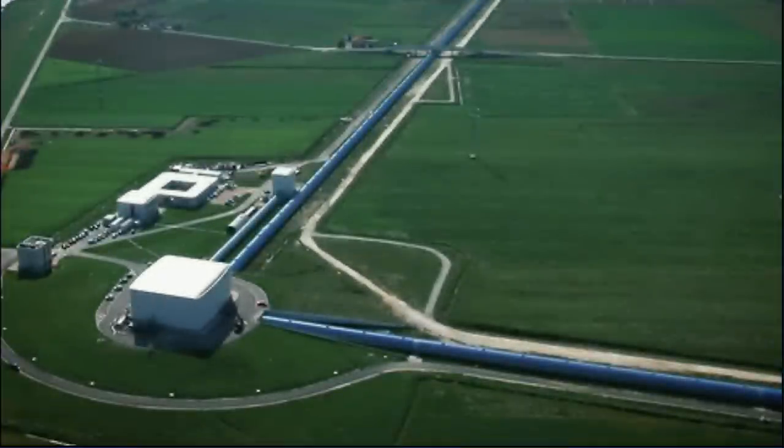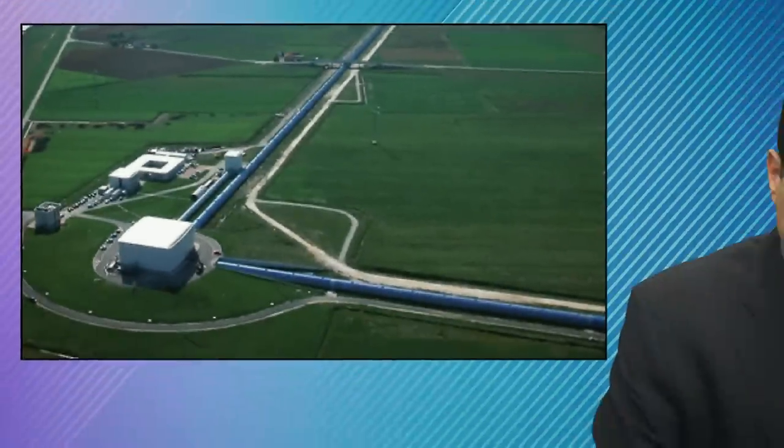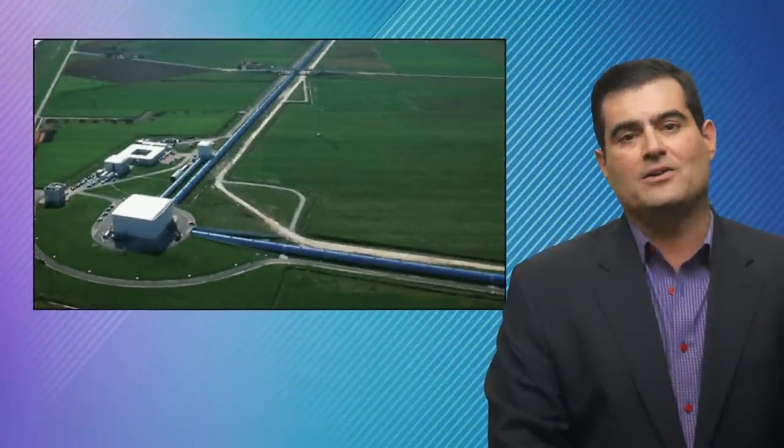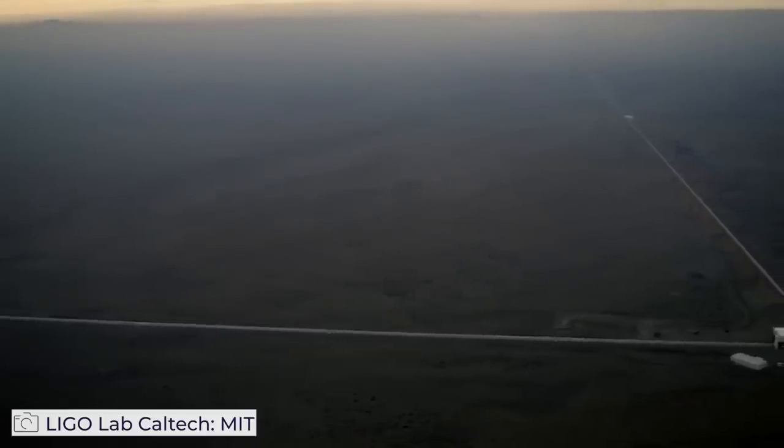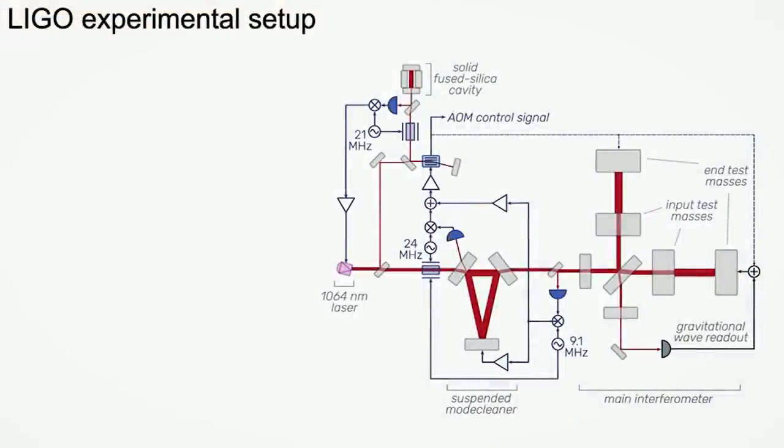To do this, the scientists are using LIGO, shown here, but not using LIGO to detect gravitational waves. It's using the phenomenal construction of what are called the test masses and the lasers cycling within it. This is from the LIGO team.